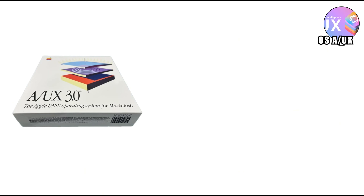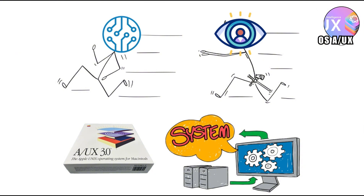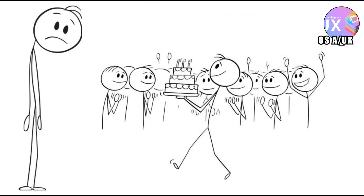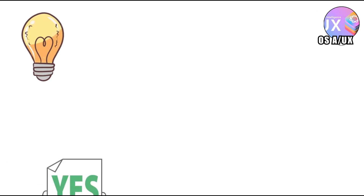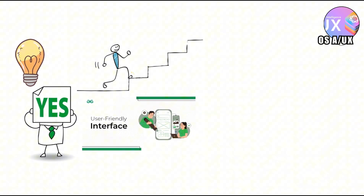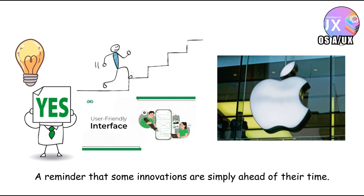A/UX wasn't appreciated in its time because the world wasn't ready for a hybrid system — technology just hadn't caught up with the vision. After a few versions, Apple quietly killed it and moved on. It's now remembered as the strange cousin of macOS nobody invites to family gatherings, but technically it was right all along. Its influence is subtle but undeniable: the idea that a consumer-friendly interface could sit atop a powerful, stable Unix core is now standard, and A/UX was the first to attempt it. In hindsight, it's a fascinating glimpse at Apple's willingness to experiment, even if the market wasn't ready — a reminder that some innovations are simply ahead of their time.